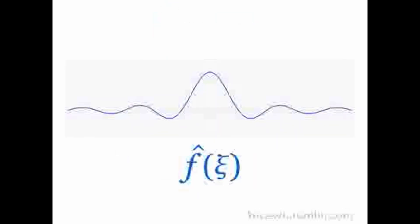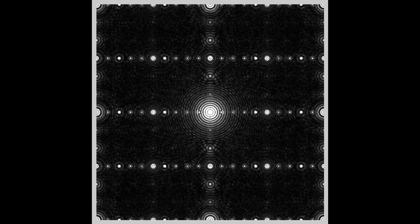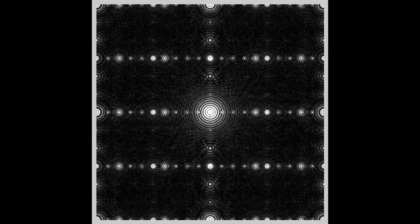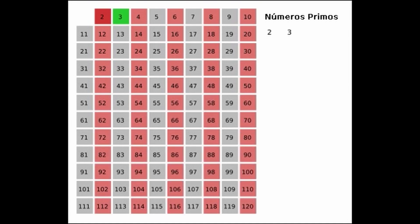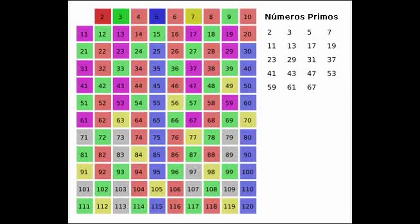Poincaré duality is a fundamental result in algebraic topology that relates homology and cohomology groups for a compact oriented manifold. For a compact oriented 2n-dimensional manifold M, a cycle and its dual cohomology class intersect in finitely many points. Intersection cohomology extends intersection homology to the cohomology setting, providing cohomology groups for singular spaces that satisfy Poincaré duality for possibly singular projective algebraic varieties. Intersection homology also satisfies the Lefschetz theorems.